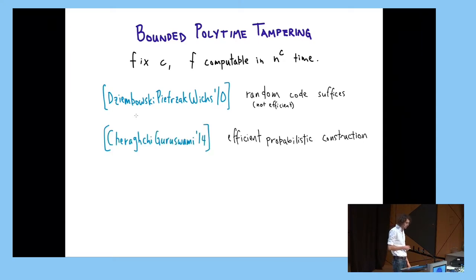Later work, Cheraghchi and Guruswami, four years later, showed efficient probabilistic construction. So they basically derandomize probabilistic construction and show that also this code can be computed efficiently, encoded and decoded efficiently. Moreover, they give an algorithm that will flip coins and output the code, and with high probability, this code is good.